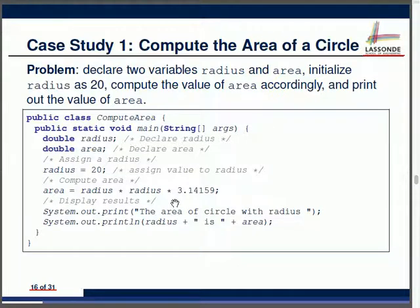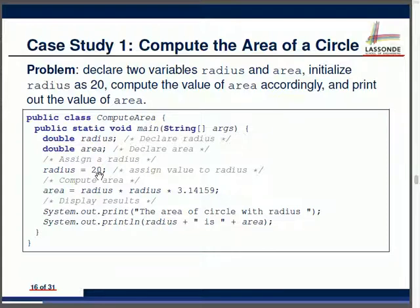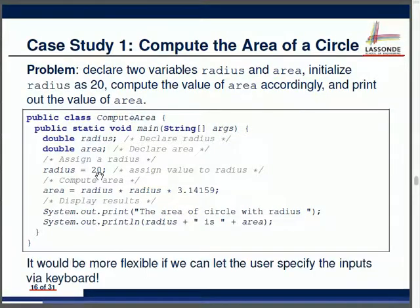We can then print out the value of the area for this particular circle. It's a simple program, but the value of 20 is hard-coded. If I want to calculate the area of a different circle I'd have to modify the value — that's inconvenient. It's actually quite useful to have some flexibility here. We need some mechanism to accept input from the keyboard.